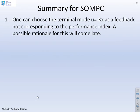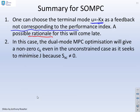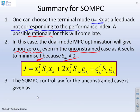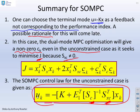So as a summary, you can choose the terminal mode U equals minus KX as a feedback which does not correspond to the underlying performance index. You might say, well, that doesn't seem to make sense. But we'll look at why you might want to do this in a later chapter. In this case, the dual mode MPC optimization will give a non-zero perturbation term, even in the unconstrained case, because it's seeking to minimize J and clearly SxC is no longer zero. The SOMPC control law for the unconstrained case can be summarized by this control law here. So you'll see it depends upon Sc and it depends upon SxC.